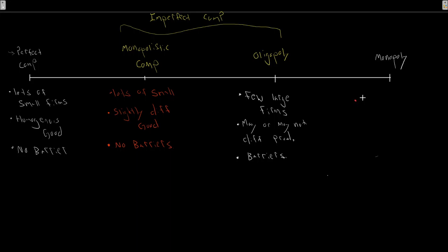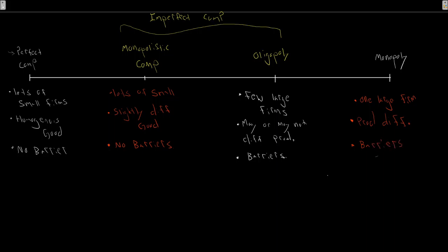Our final market structure is a monopoly — just one large firm. This is interesting because they're the only one selling that good, so you could say there's this extreme product differentiation: the good is so differentiated from anything else that there's no other alternative. You either buy this monopolist's version of the product or you just don't have access to it. And with monopoly, we're going to have very, very large barriers.